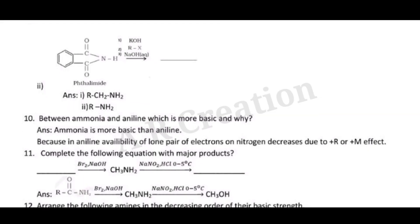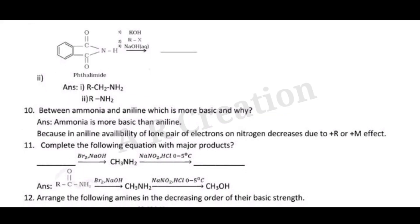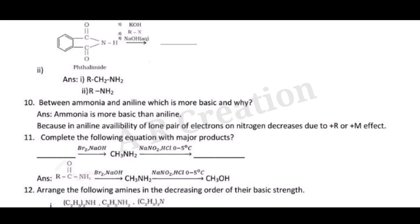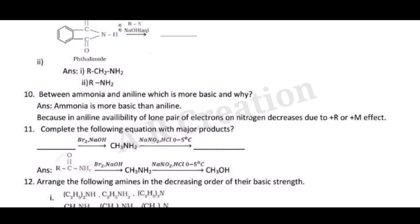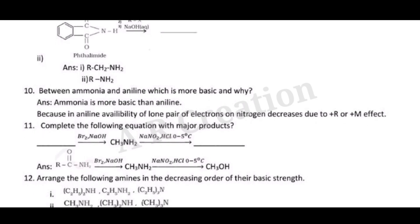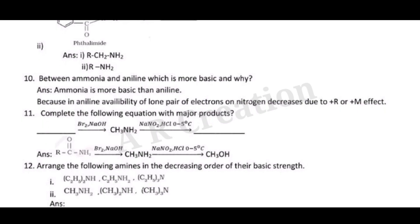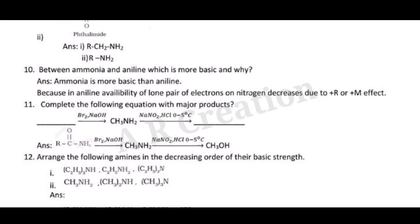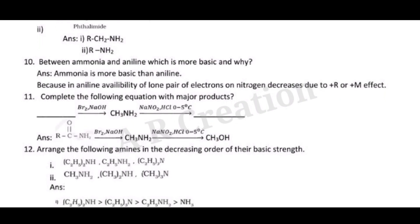Question 10: Between ammonia and aniline, which is more basic and why? Answer: Ammonia is more basic than aniline, because in aniline the availability of the lone pair of electrons on nitrogen decreases due to the +R (or +M) effect.